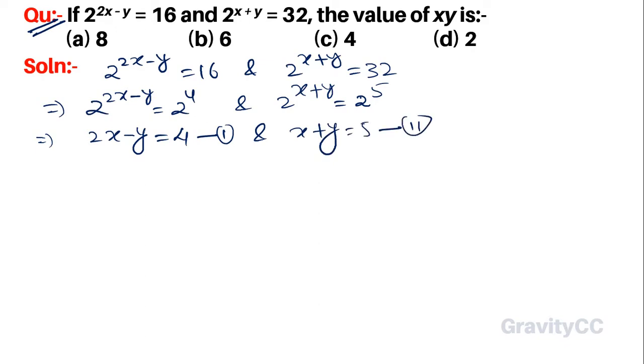Now we add both equations: (2x - y) + (x + y) = 4 + 5. The y terms cancel, so 3x = 9.